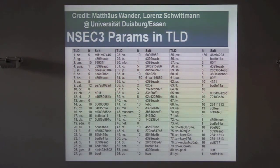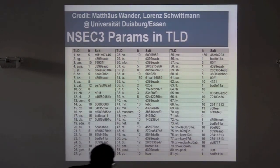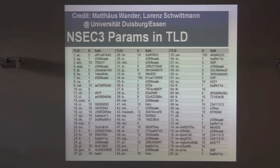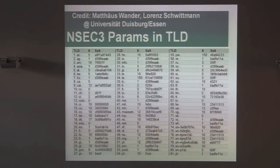According to the RFCs, the zone owner must not choose an iteration value higher than specified for a given key size. For 2K keys it's 500, for 4K keys it's 2,500. So the spec allows higher iteration counts with bigger key sizes. On the face of it, signing your domain with DNSSEC makes it significantly easier for someone to enumerate all your records — it looks almost trivially easy.